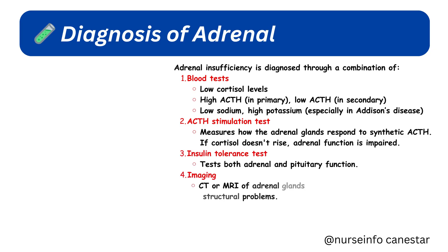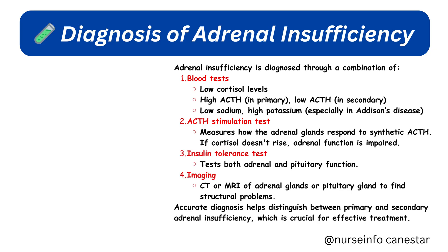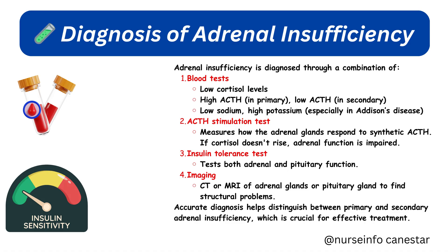Adrenal insufficiency is diagnosed through a combination of methods. Blood tests may show low cortisol levels, high ACTH in primary or low ACTH in secondary insufficiency, and low sodium or high potassium especially in Addison's disease. The ACTH stimulation test measures how the adrenal glands respond to synthetic ACTH — if cortisol doesn't rise, adrenal function is impaired. The insulin tolerance test evaluates both adrenal and pituitary function. Imaging via CT or MRI of the adrenal glands or pituitary gland can identify structural problems. Accurate diagnosis helps distinguish between primary and secondary adrenal insufficiency, which is crucial for effective treatment.